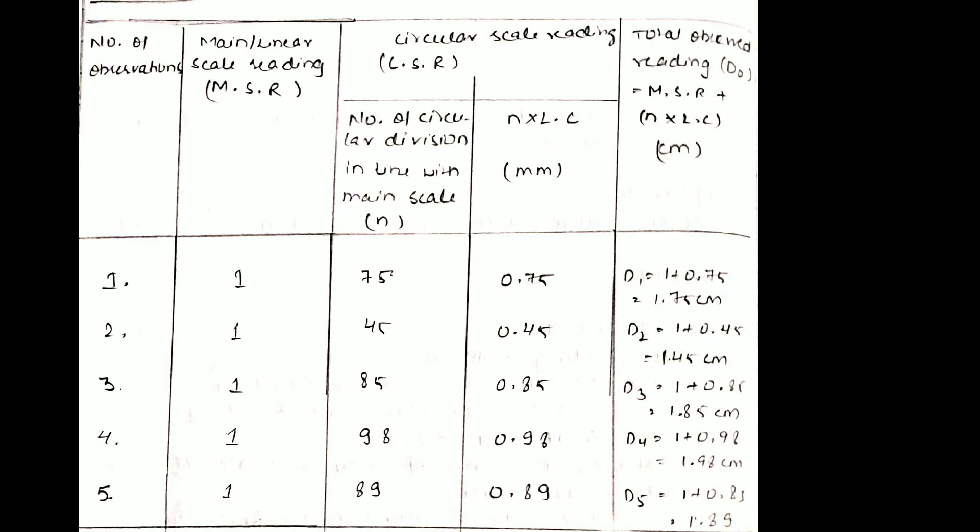Then I multiplied n with the least count, or you can say the screw gauge constant, that is 0.001 centimeter. The answers were 0.75, 0.45, 0.85, 0.98, and 0.89. N into LC is the circular scale reading. Then we add MSR and CSR, and the answers were D1, D2, D3, D4, and D5.